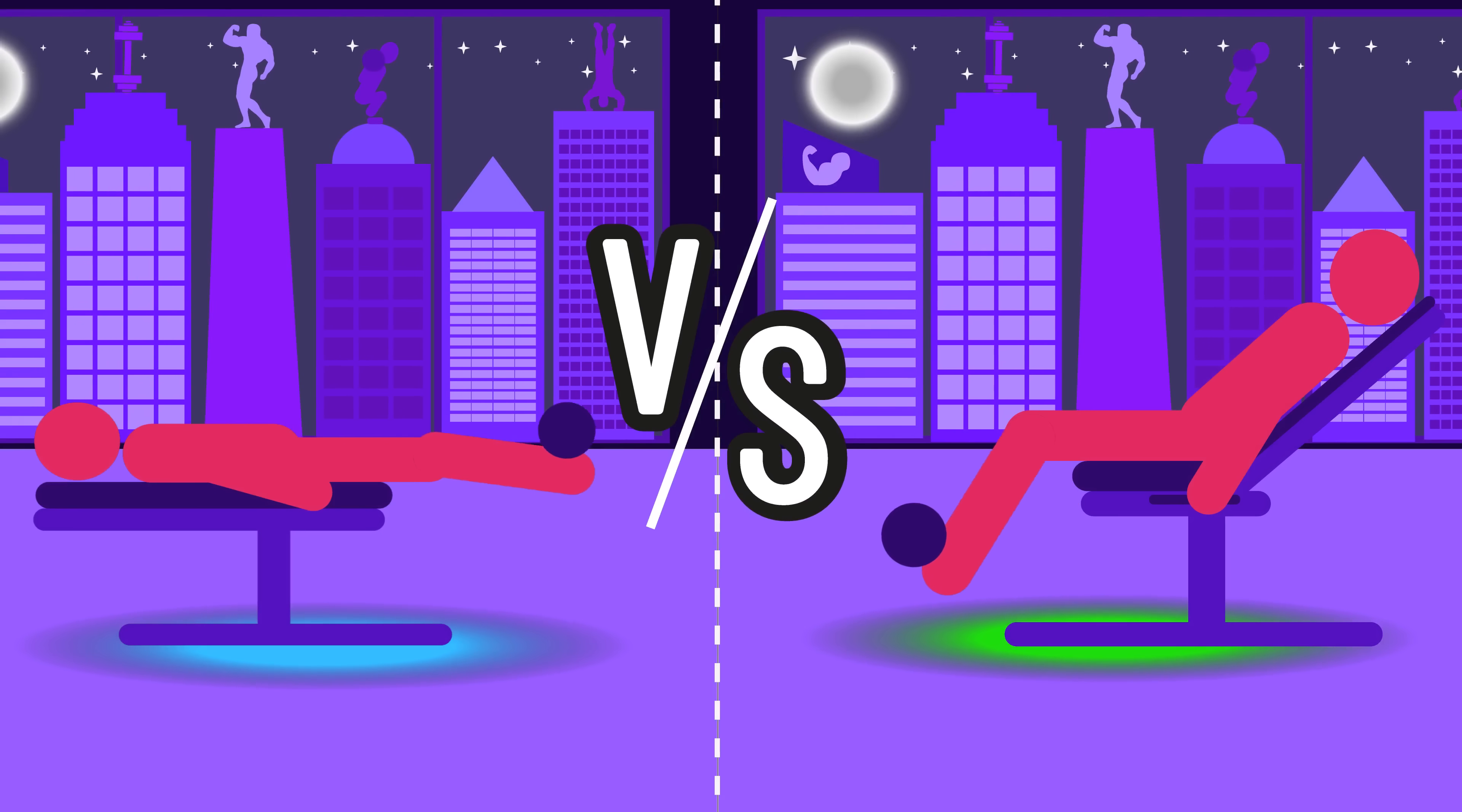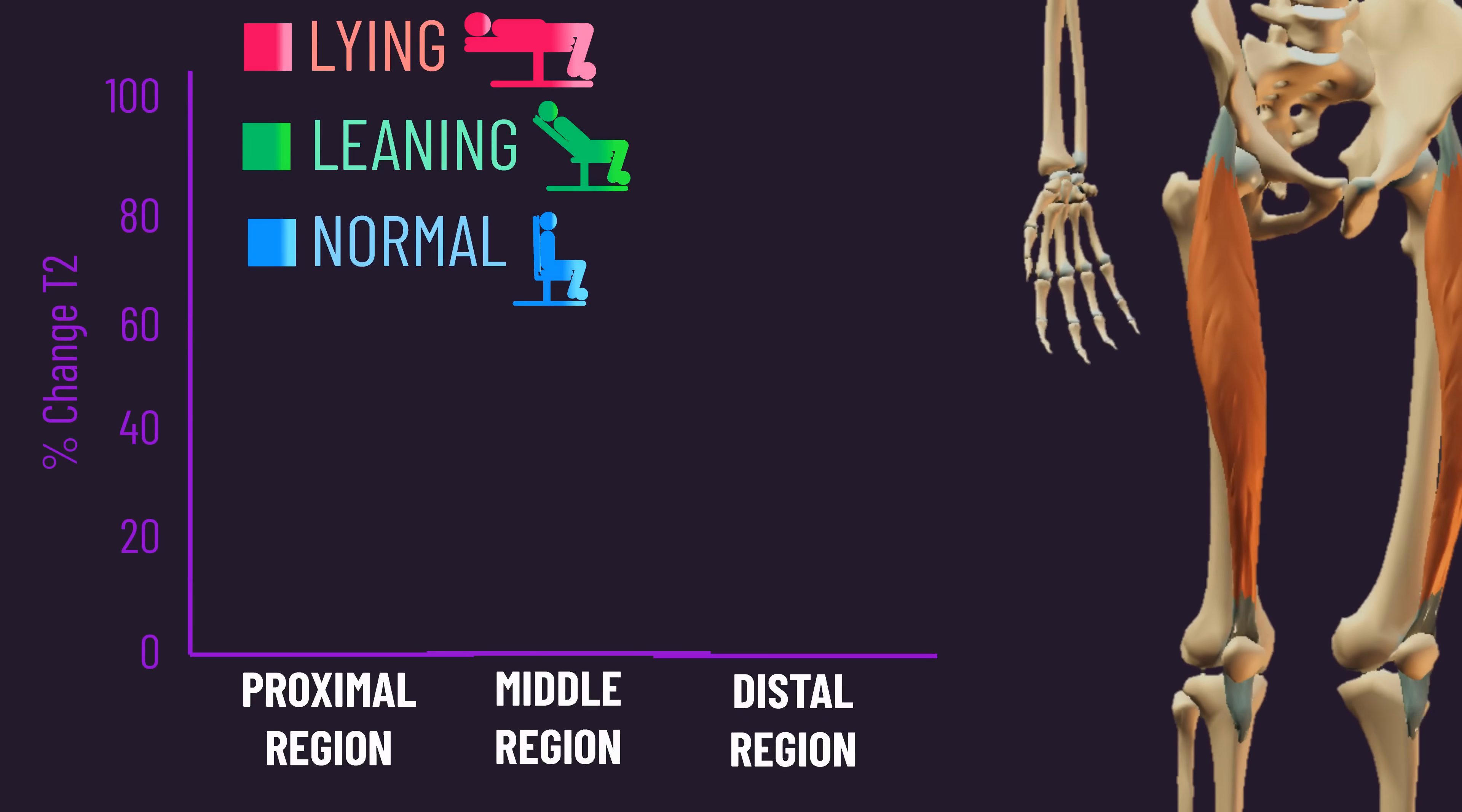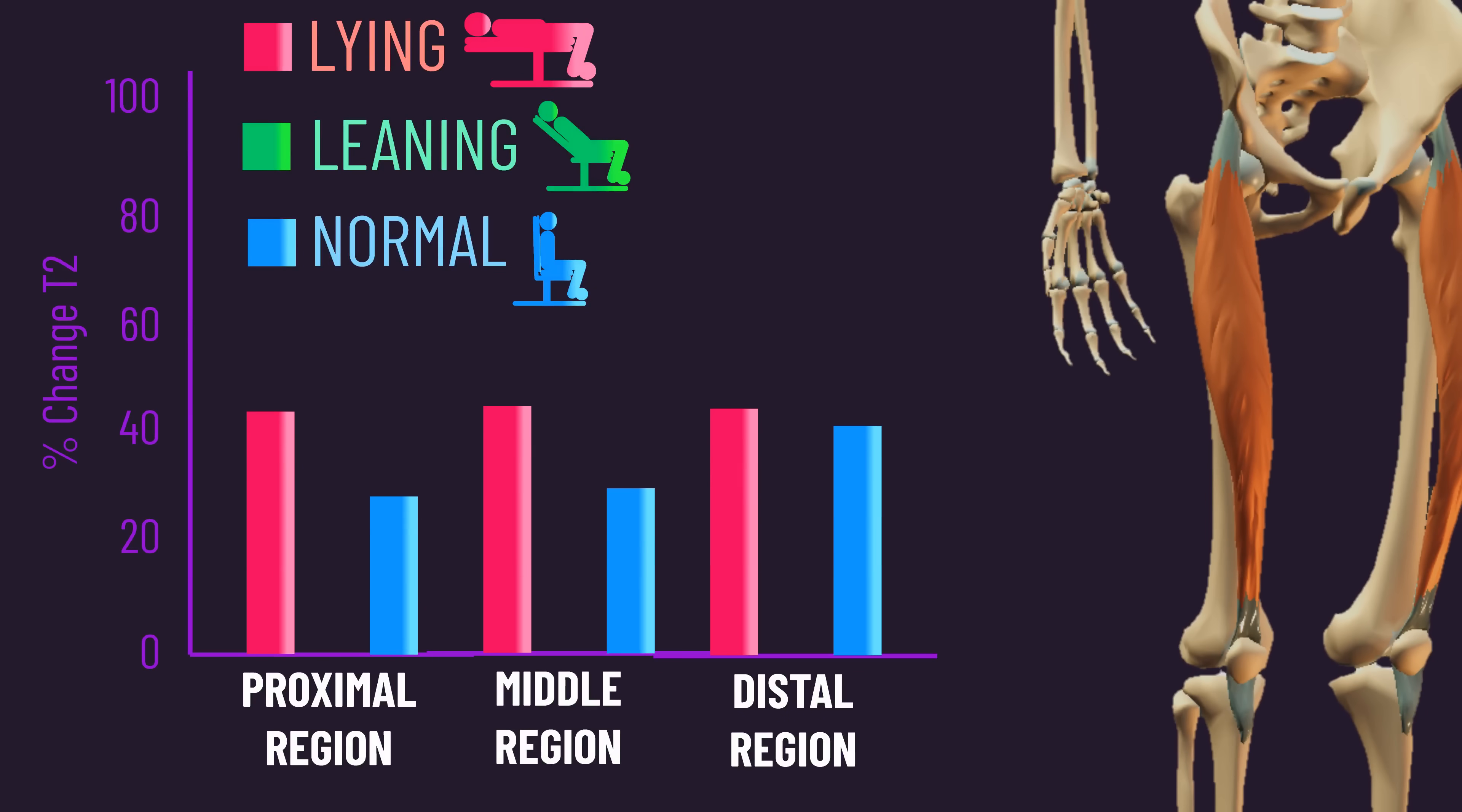I say this as lying down on the leg extension, which stretches the rectus femoris even more, although still producing better activity than normal leg extensions, wasn't any more effective than the leaning back leg extensions.